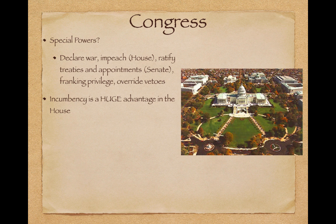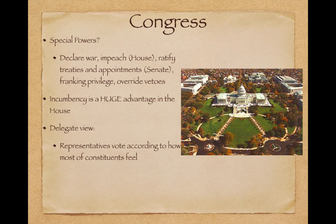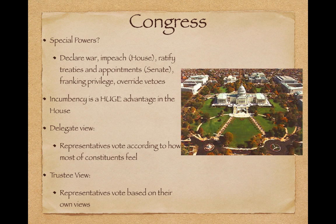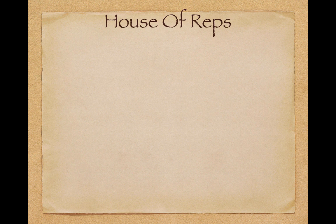Incumbency is a huge advantage in the House — incumbency is the person who is the current seat holder. The delegate view is when representatives vote according to how most of their constituents feel, so it's an accurate representation of their constituents. The trustee view is when representatives vote based on their own views, and there are different reasons why they may vote one way or the other, particularly on controversial issues.